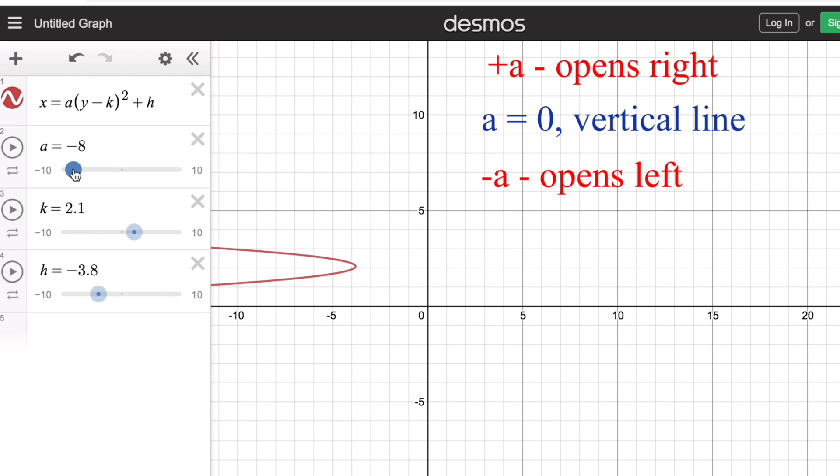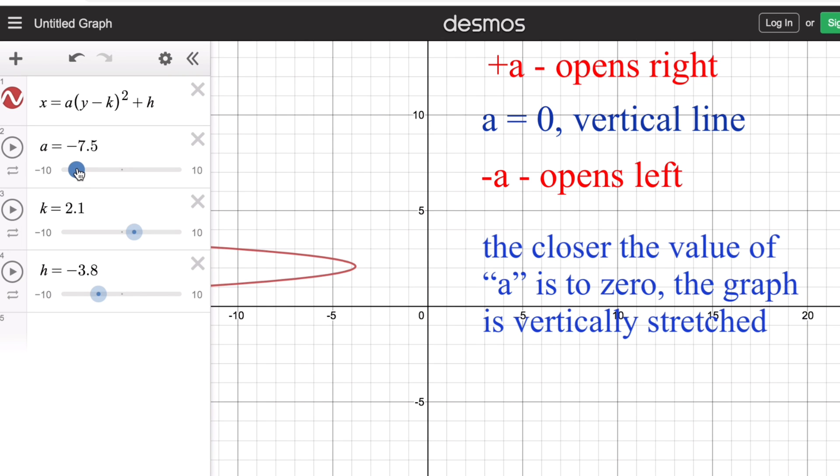We also remember that if the value of a gets closer to zero, the graph becomes vertically stretched. You can see the graph becomes more and more vertical until at zero it becomes a vertical line.